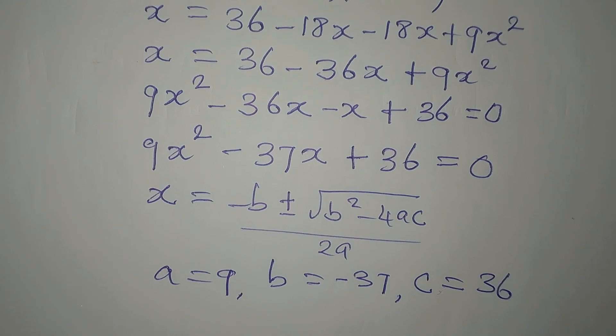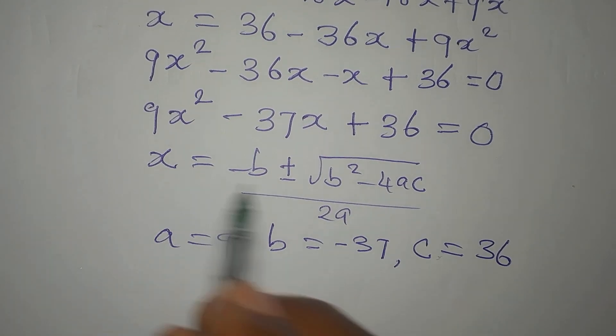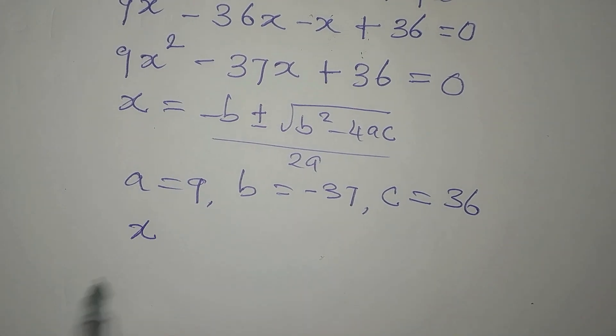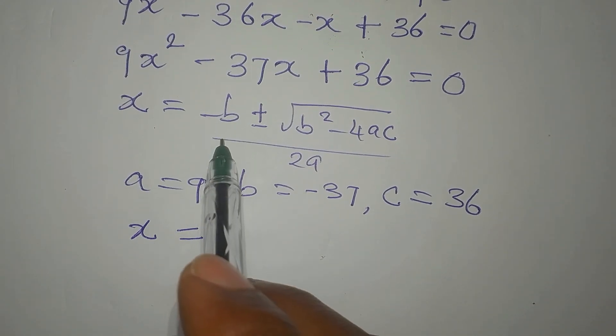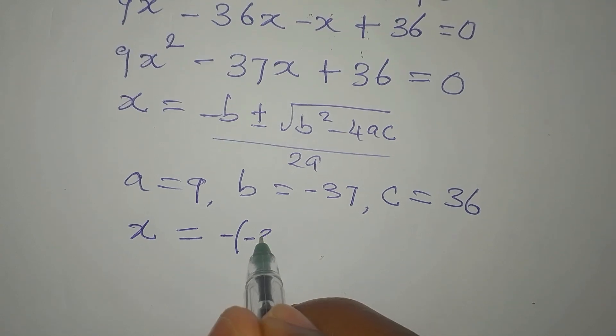So, we'll now put these values of a, b, c into the formula. Okay, so we have x equals, in place of minus b, minus minus 37. Then plus or minus,